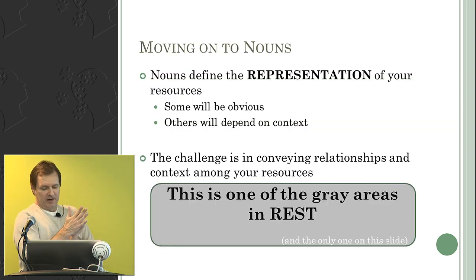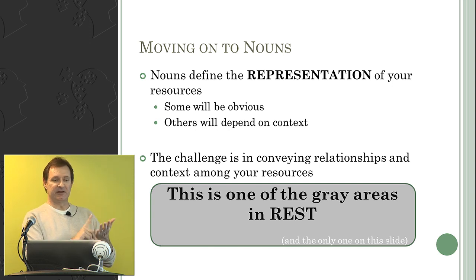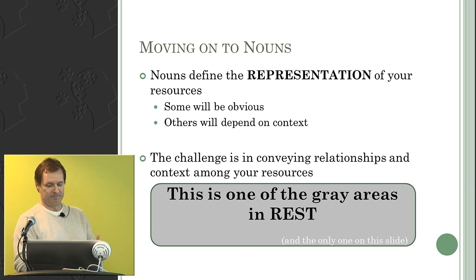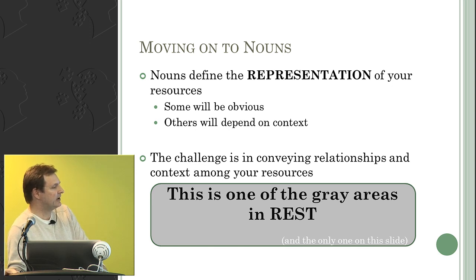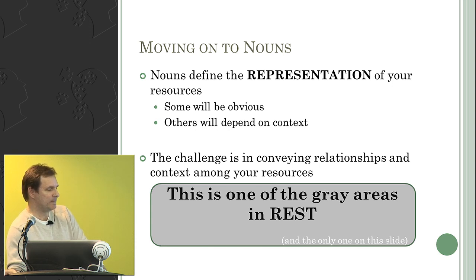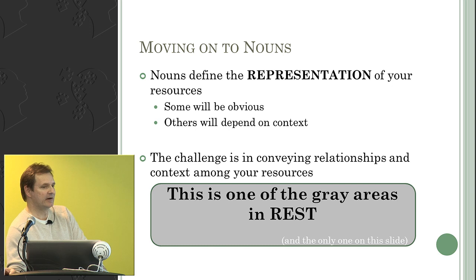Now the nouns—this is where we define our representations, and this is where it gets a little hairy. Not in the actual nouns themselves, but in defining the relationships amongst the nouns. If I have two tables or two entities that are related somehow, how do I convey that relation in a RESTful way?